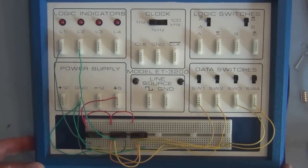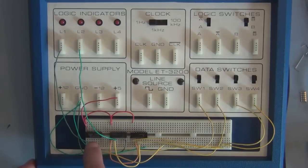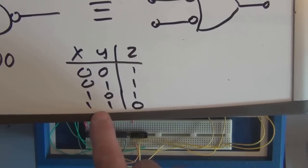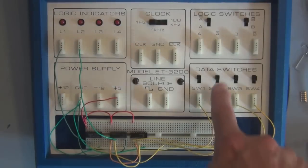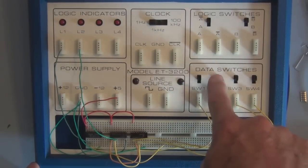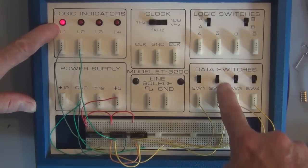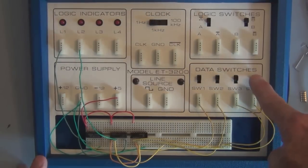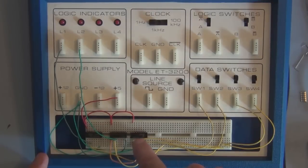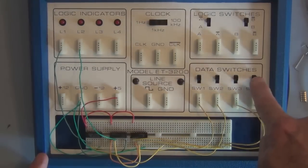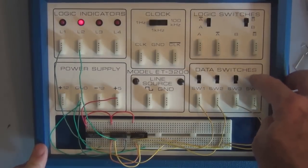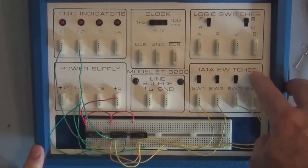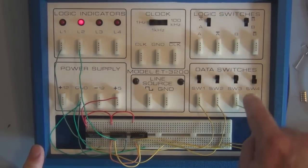I have all three ICs wired up to verify the second theorem. The first IC is a 7400 NAND gate — it is low only when both inputs are high; for all other cases the output is high. Starting with two 1s on the input, the LED is not lit. For any other combination, the output is lit and high. The same goes for the 7432 with 7404 inverters on the input — two highs give no LED; any other combination gives a high output. An OR gate with inverters on the inputs is equivalent to a NAND gate, and this verifies it.